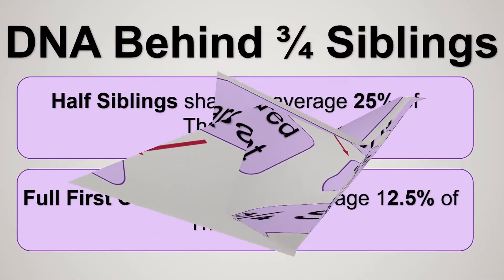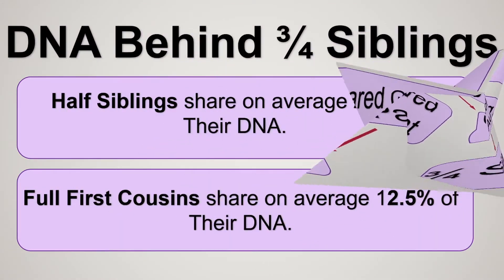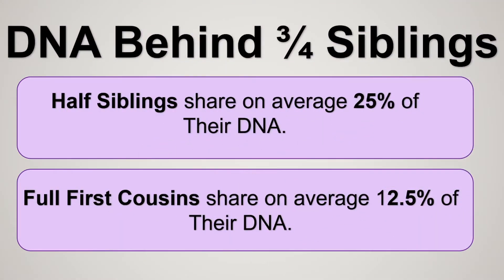Now for the DNA behind three-quarter siblings: half siblings share on average 25% of their DNA, and full first cousins share on average 12 and a half percent of their DNA. 25% plus 12 and a half percent makes the average of 37 and a half percent DNA shared between three-quarter siblings.